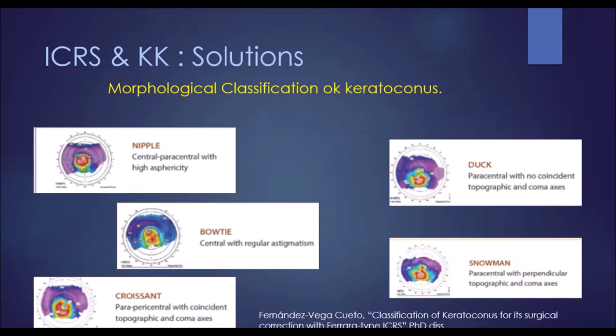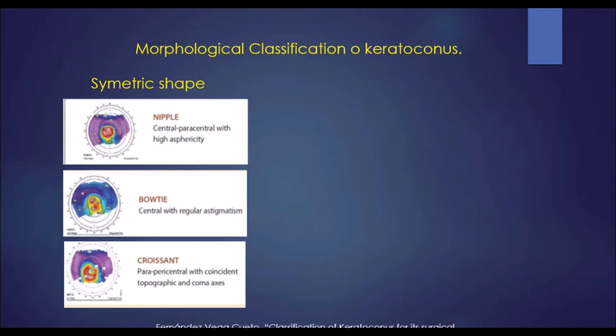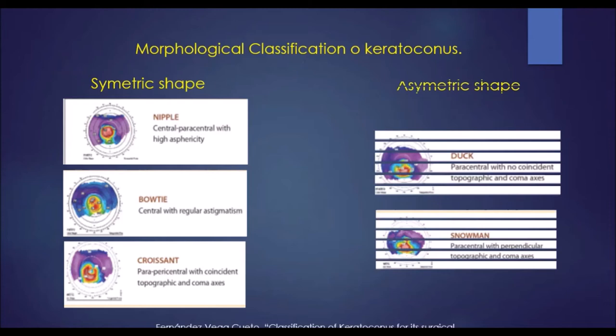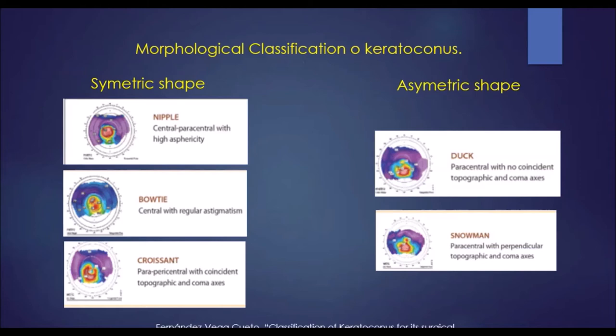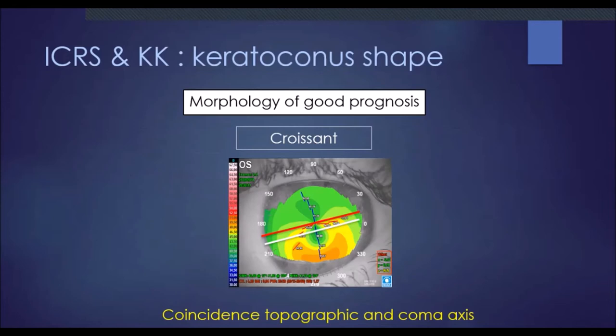This is a morphological classification of keratoconus. There are five types of shape: nipple, bowtie, croissant, duck, and snowman. The good prognosis shapes are symmetric: nipple, bowtie, and croissant. In nipple morphology, we have high asphericity, and with a long arc ring of 320 degrees we get very good results. With bowtie morphology, we have regular astigmatism, and when we place two symmetrical rings we also achieve good results.